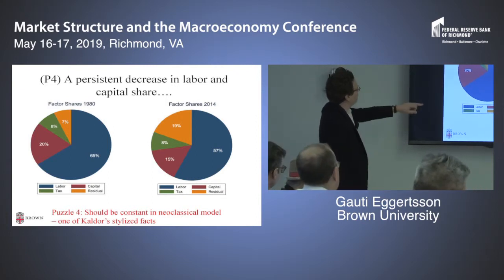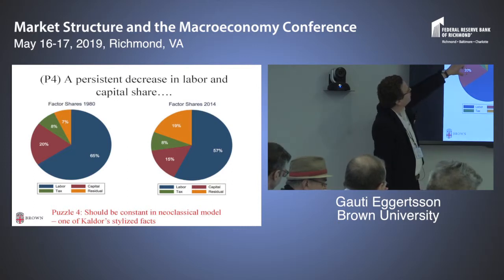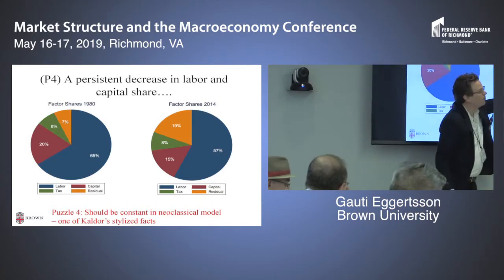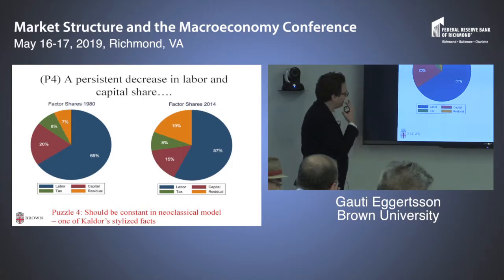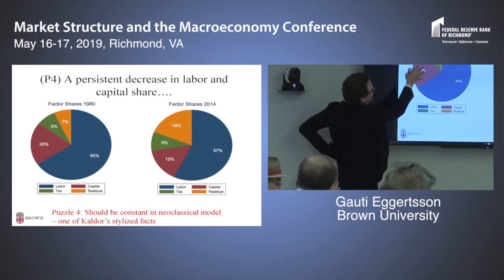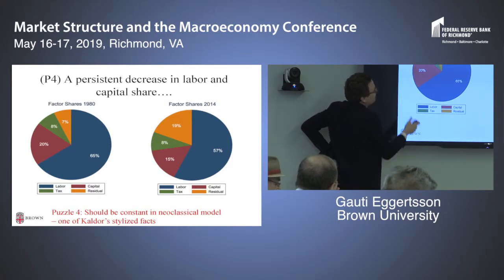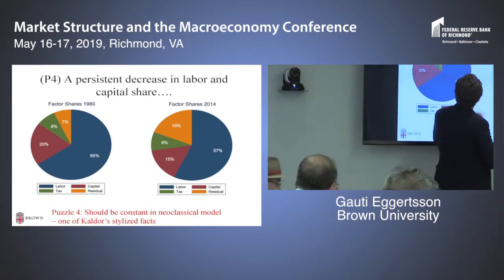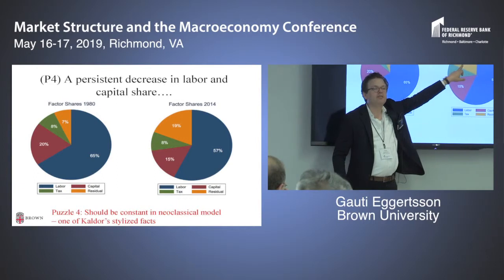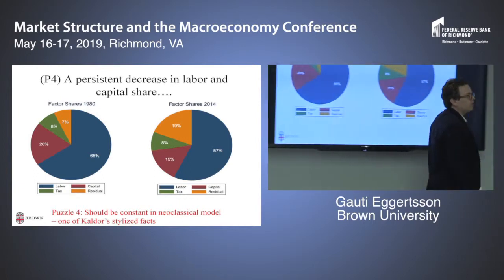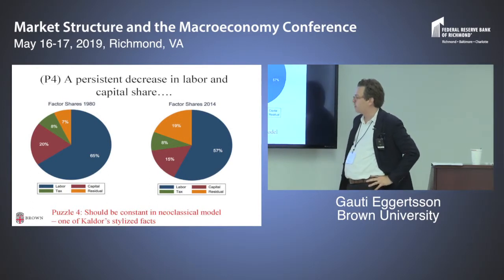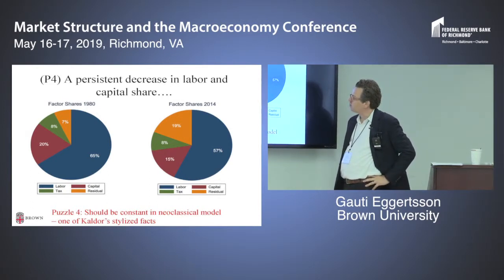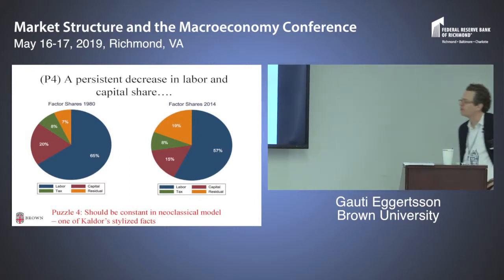There's one more puzzle. We have seen a decrease in both labor and capital share. The literature seems to be agreeing there has been a decline in labor share, and depending on how you measure capital share, there seems to be some evidence for a decline there as well — giving rise to what Carabarbounas and Neiman call an increase in factorless income. That is, an increase in income you can't attribute to either labor or capital. These shares should be constant in the neoclassical model — that's one of Kaldor's other stylized facts.